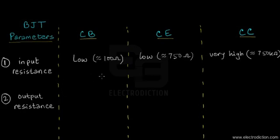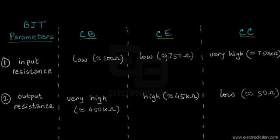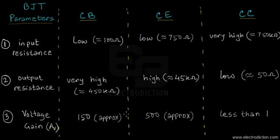Moving to point number two — the output resistance of the various BJT operating modes. For the Common Base mode, the output resistance is overwhelmingly high at about 450 kilohms. The Common Emitter mode is about ten times less, at around 45 kilohms. In the Common Collector mode it's very low — only about 50 ohms. This means CB and CE modes can provide voltage gain, but the Common Collector mode cannot.